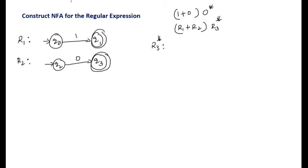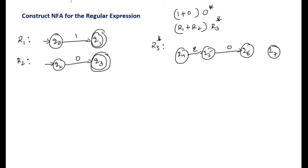Now construct the FA for r3 star, where r3=0. We take states q4, q5, q6, and q7. q4 on epsilon moves to q5, q5 on 0 moves to q6, q6 on epsilon moves to q7. q4 is the starting state and q7 is the final state. For r3 star, without reading any symbol it must reach the final state, so q4 on epsilon also connects to q7. r3 can be repeated any number of times, so we add a transition from q6 to q5 with epsilon.